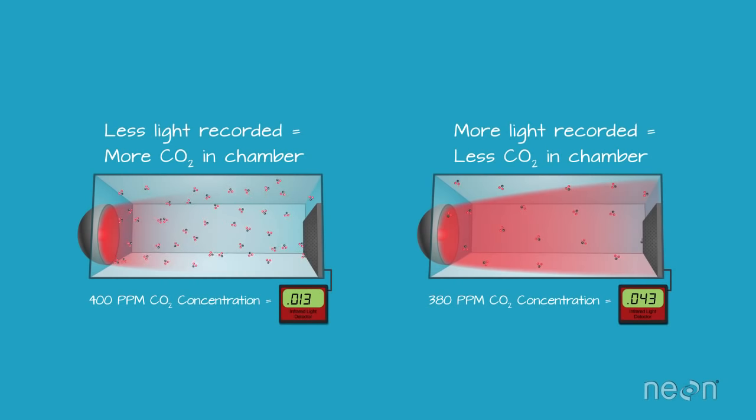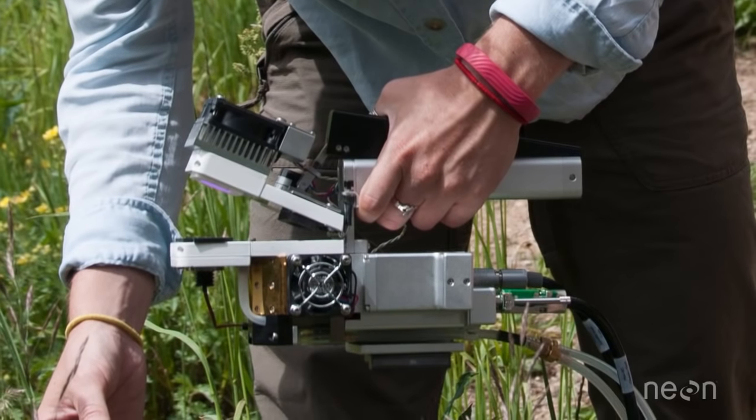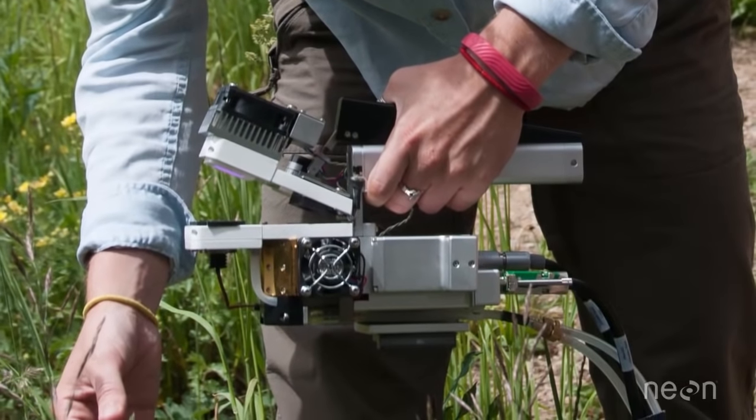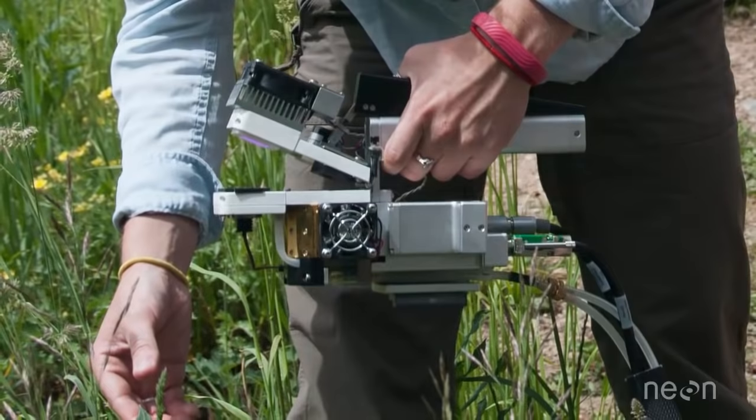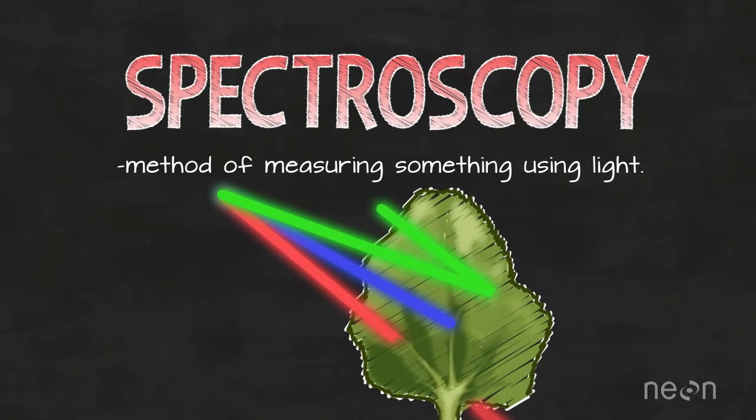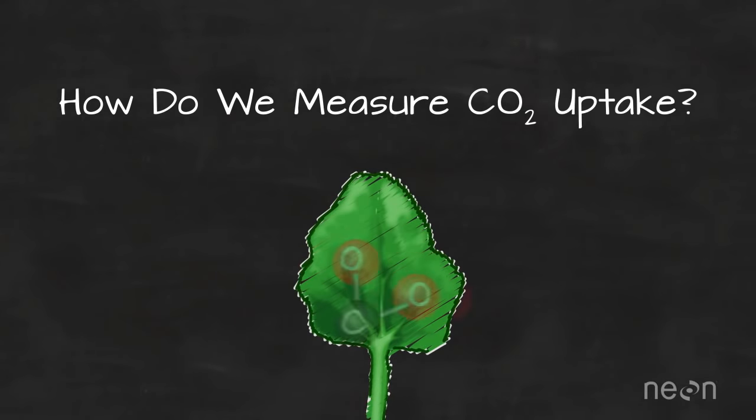This chamber system is called an infrared gas analyzer. Infrared gas analyzers are commonly used to measure CO2 uptake. So now that we understand the basics of spectroscopy, how do we measure CO2 uptake of an individual leaf?